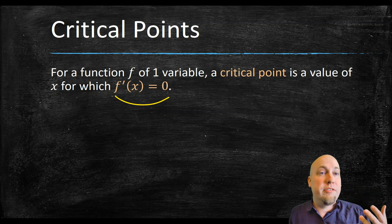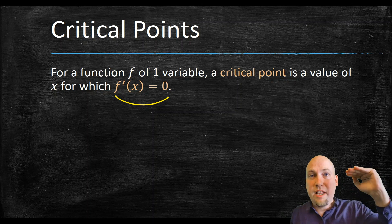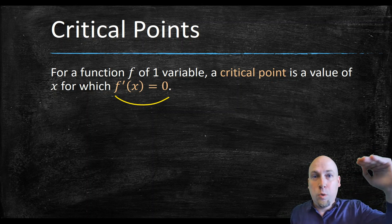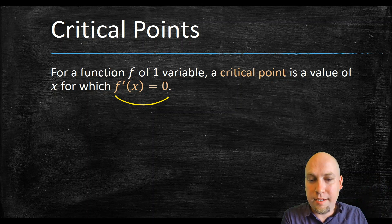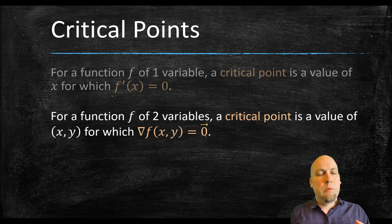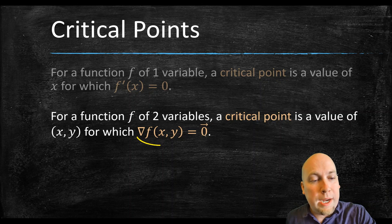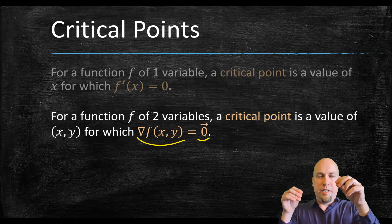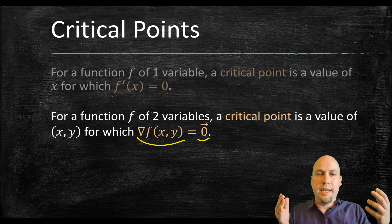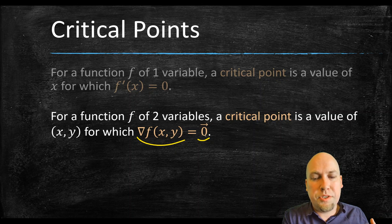A critical point for a multi-variable function is going to be basically the same thing — a spot where on the graph of that function it's flat and horizontal. For a function of two variables, a critical point is a pair (x, y) — a set of inputs for which the gradient equals zero. This time you don't just need one derivative because there's a whole bunch of derivatives: partial derivatives in the different directions. We need the entire gradient to equal zero.